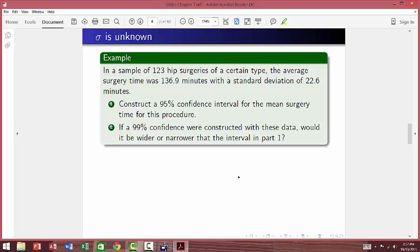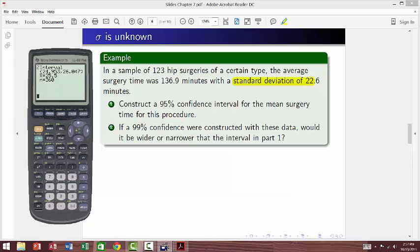So, how do you know when you need to use t interval? Let's take a look at the next problem. In a sample of 123 hip surgeries of a certain type, the average surgery time was 136.9 minutes with a standard deviation from that sample of 123 surgeries, 22.6 minutes. So, nowhere in the problem does it say assume the population standard deviation. Now, this standard deviation right here comes from this sample right here, which is s. So, that's how you know that we need to use t interval to construct this interval here. So, where is it? It's still in the same place. We go to stat test. And it's actually command A if you go all the way here. Here's your t interval.